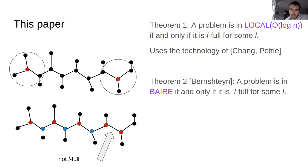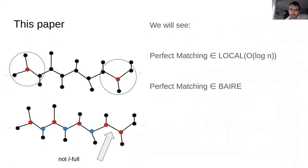Unfortunately both theorems are complicated, so I cannot explain the main proof ideas. Instead I want to give two examples: one showing why perfect matching is in local O(log n), and another showing why perfect matching is in the Baire class. These two reasons are actually a little bit different, and this will give us some intuition about what the theorem is saying.